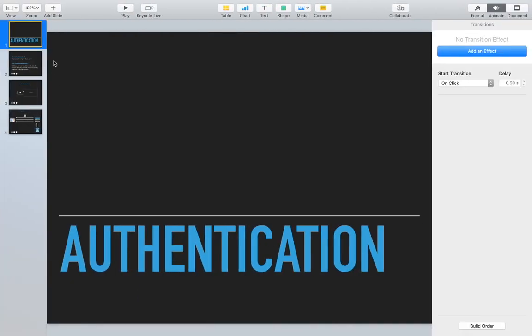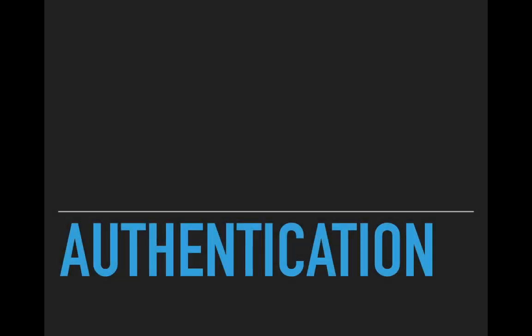Hello everyone, welcome to the new session. In this session we will cover authentication. Access control has two basic parts: the first one is authentication, and once you authenticate someone, the next step is to authorize them to access restricted resources. We'll cover this in two different sessions — this current session covers authentication, and the next session will cover authorization.